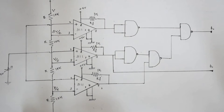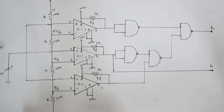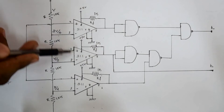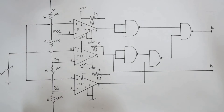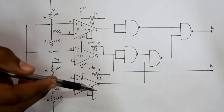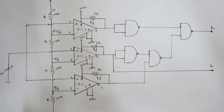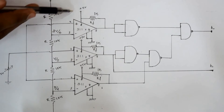Now let us consider the variation of the input. When the variable input voltage is between 0 and V by 4, the output of these 3 comparators becomes 0. When the variable input voltage is between V by 4 and V by 2, the output of just this comparator becomes 1 and the other 2 become 0. When the variable input voltage is between V by 2 and 3V by 4, the output of these 2 comparators becomes 1 and the output of the other becomes 0. When the variable input voltage is between 3V by 4 and V, the output of all 3 comparators becomes 1.